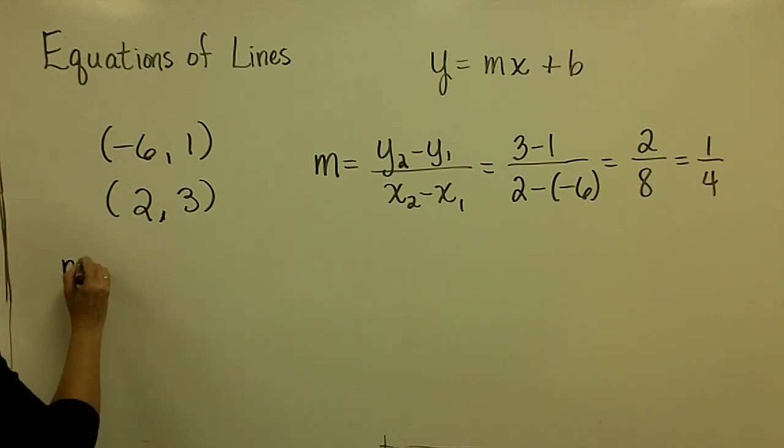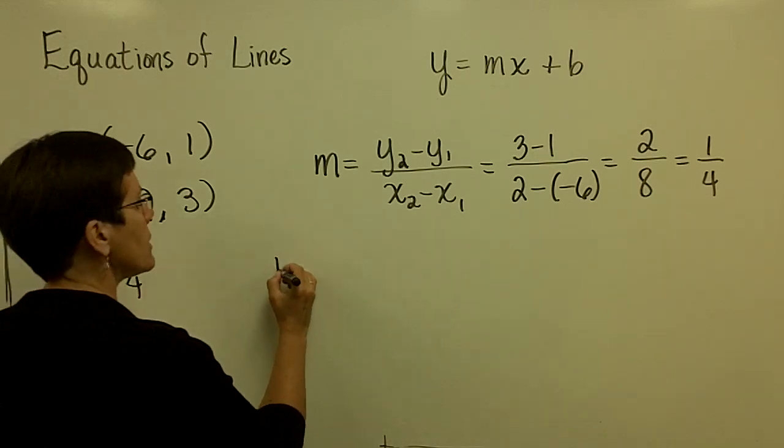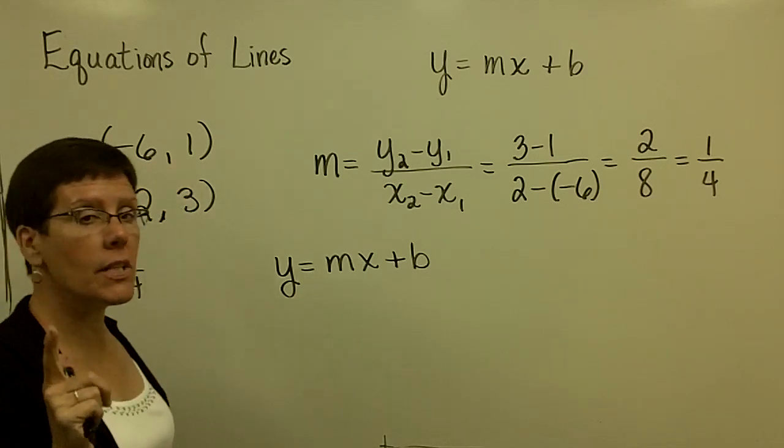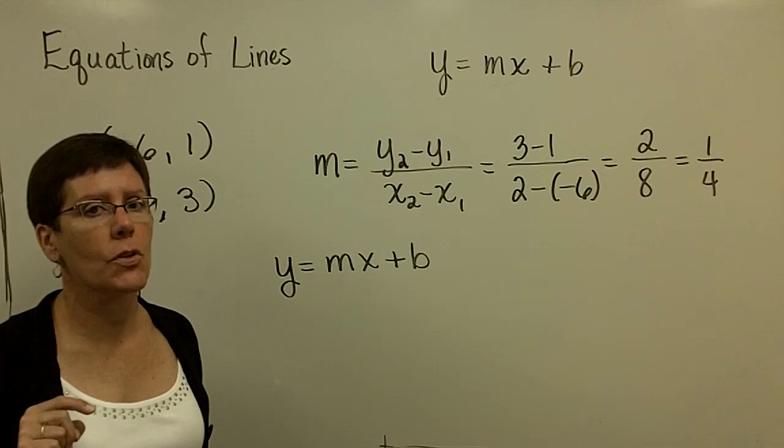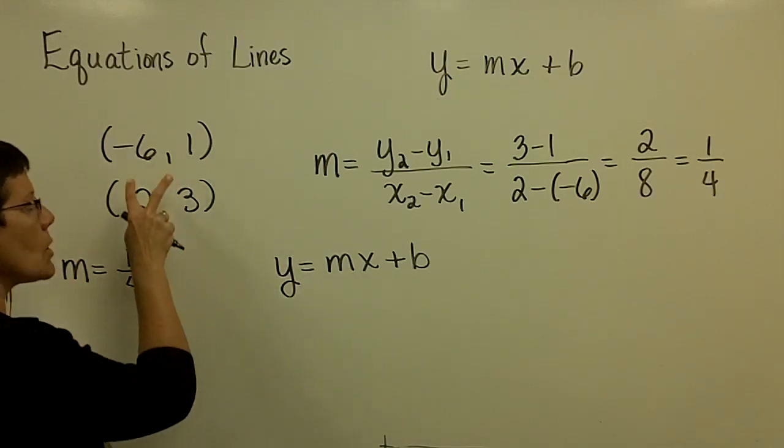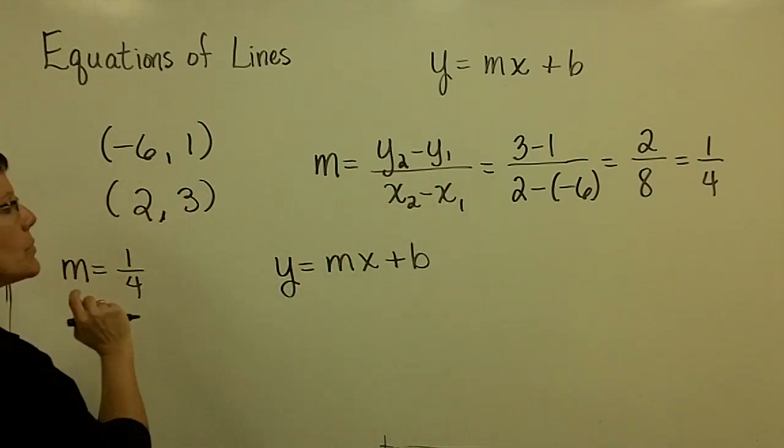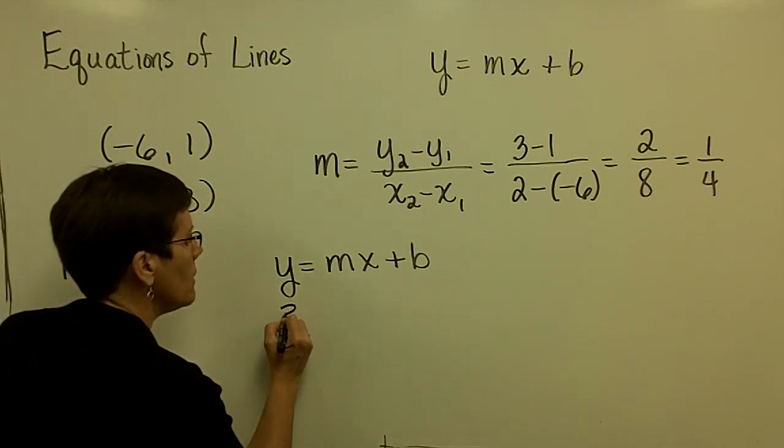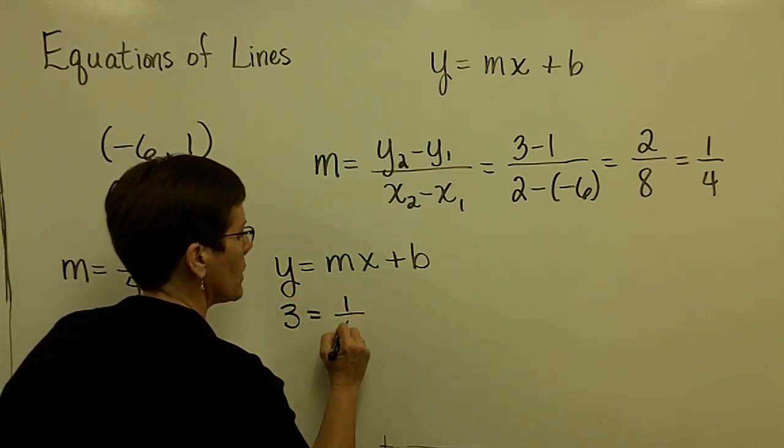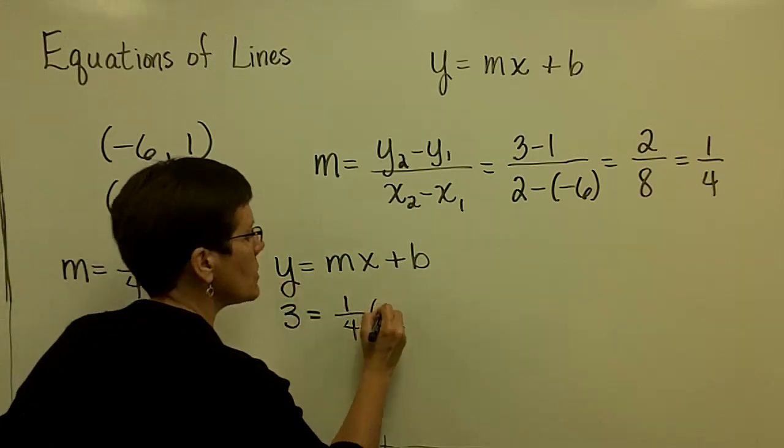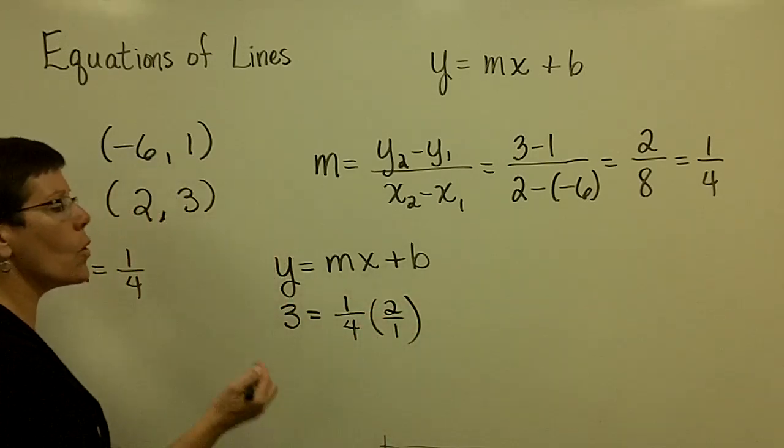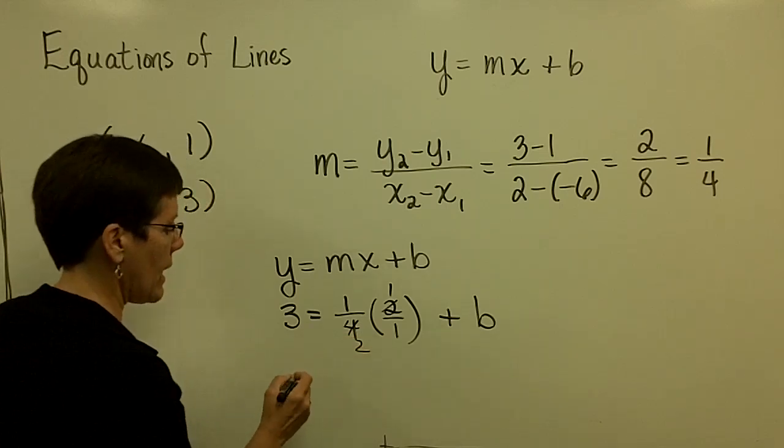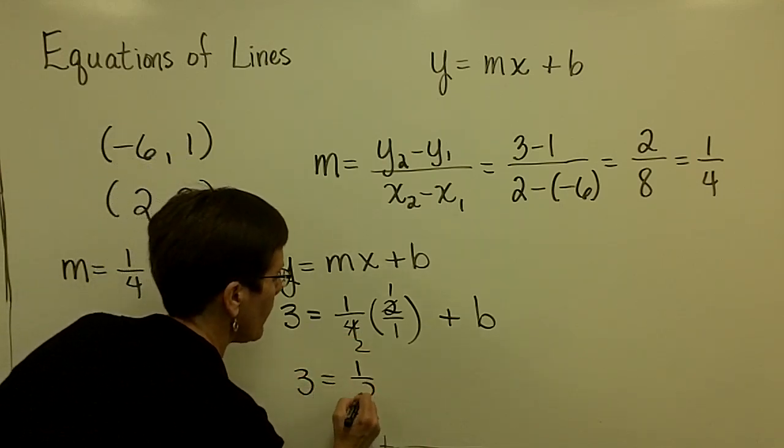I'm now going to take that slope of 1 fourth and put it into this equation with one of these two ordered pairs. It doesn't matter which one, and you should try it using the other one. I'm only going to take the time to try to use one of the ordered pairs. Because those two ordered pairs cause that slope, I can use either one. I'm going to take this one because they're both positive values. So for y, I'm going to put in a 3. For m, I know I need to use a 1 quarter. For x, therefore, I have to use the 2. I'm going to put it up high so I can see it. It's a 2 or 2 over 1. And I am attempting to solve for b. So this fraction right here turns out to be 1 half.